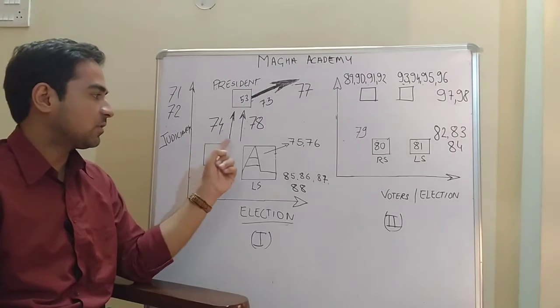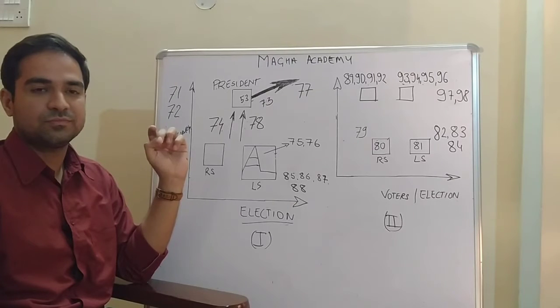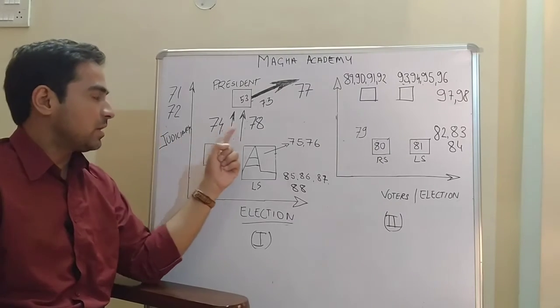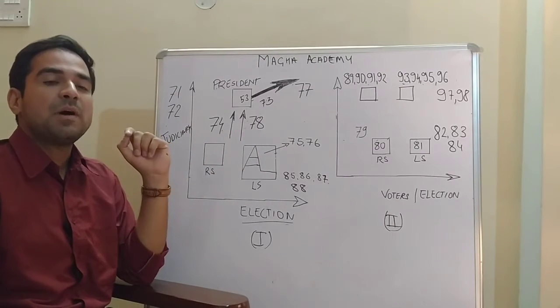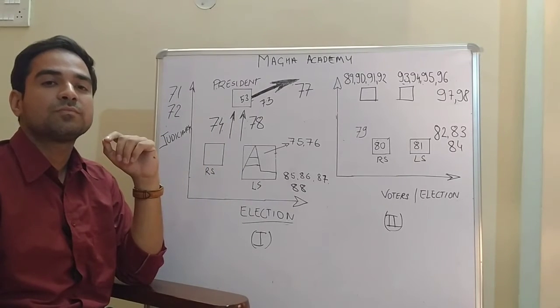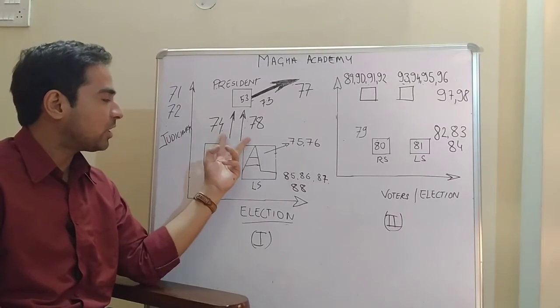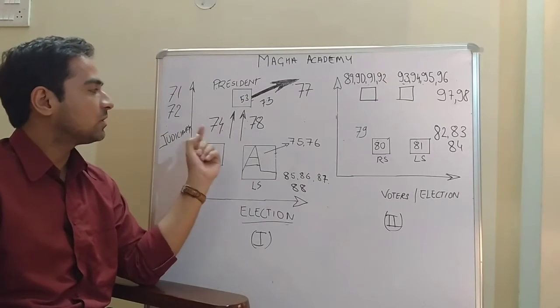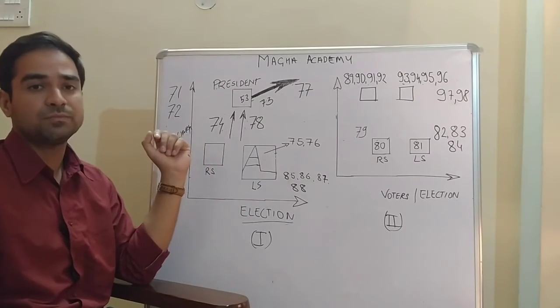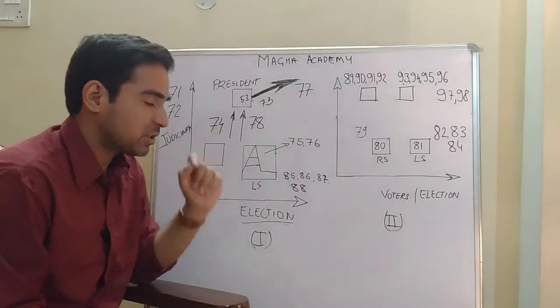Article 74: the aid and advice of the Council of Ministers. It works on aid and advice, but Prime Minister has a duty to furnish him with information. These two important articles should be read together. Article 74 is very important, which makes President the titular head and Prime Minister the real head.